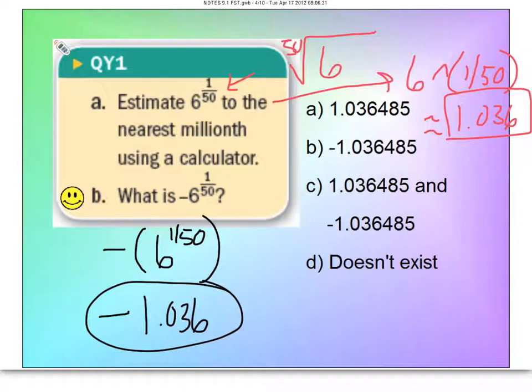You know, if it had been negative 6 now to the 1/50th root, what number 50 times would get you this? It would end up being an imaginary value.